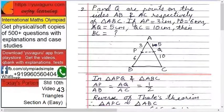AP equals 3, PB equals 6, AQ equals 5, QC equals 10. Then find BC. Here you can use the similarity of triangle concept or there is also called Thales theorem, it's one and the same.